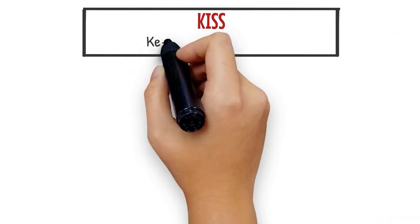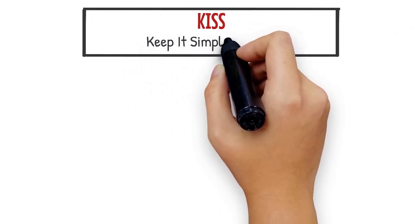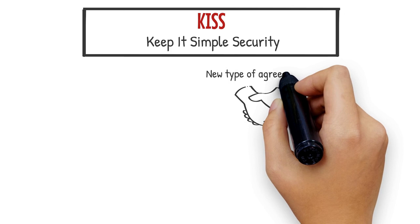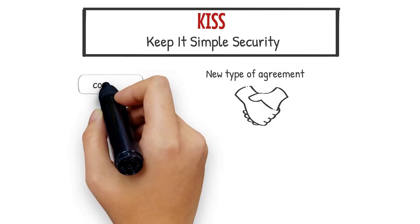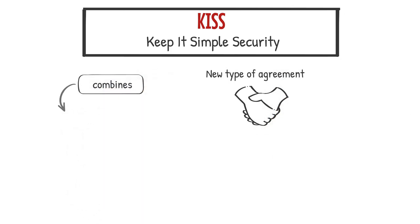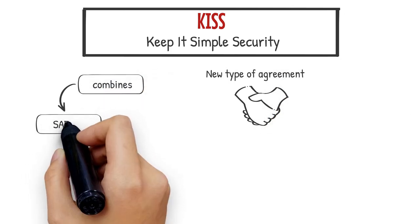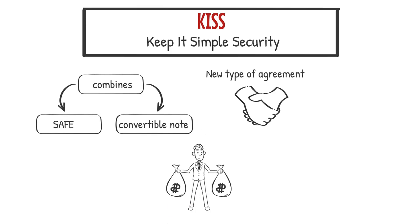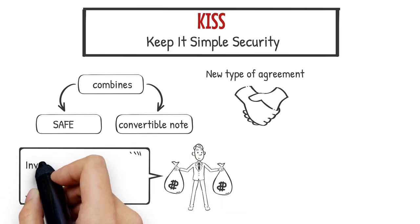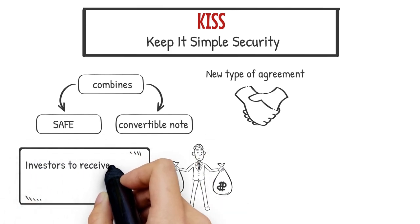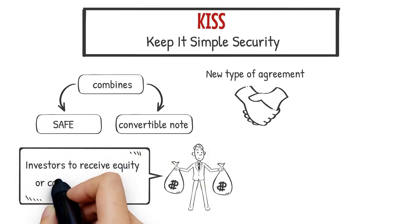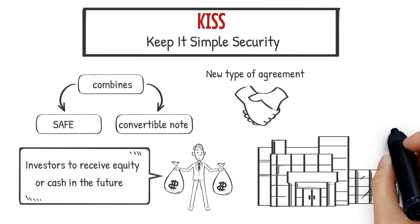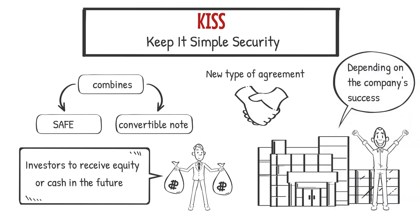KISS, or Keep It Simple Security, is a relatively new type of agreement that combines the simplicity of a SAFE with the flexibility of a convertible note. It allows investors to receive equity or cash in the future, depending on the company's success.